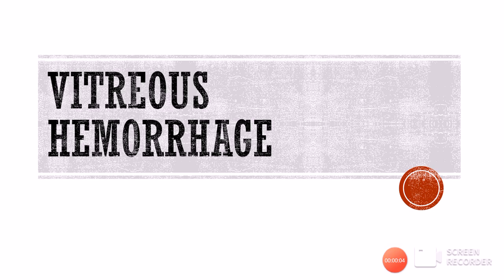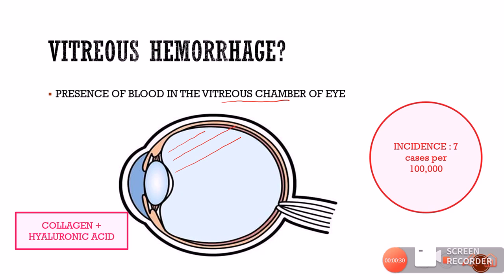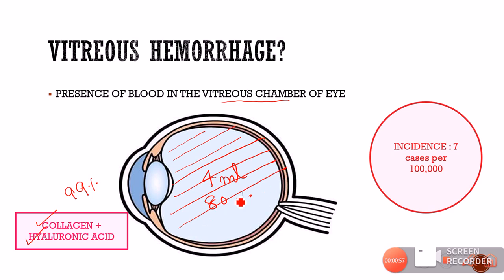Welcome. This is Dr. Amrit welcoming you to Insight Ophthalmology. Today's lecture is on vitreous hemorrhage. The presence of blood in the vitreous chamber of the eye is called vitreous hemorrhage. The vitreous chamber is occupied by the vitreous humor, which is a transparent, colorless, jelly-like hydrophilic gel. It is about 99 percent water, and the remaining is collagen and hyaluronic acid. Any blood present in this vitreous cavity is called vitreous hemorrhage.